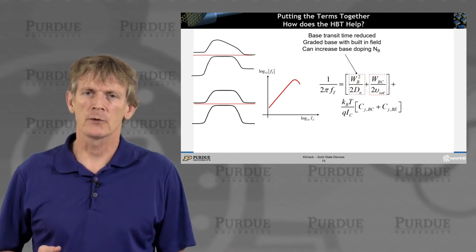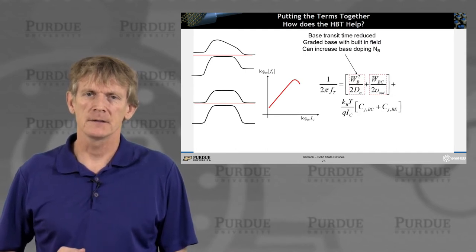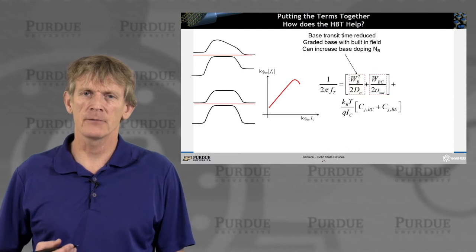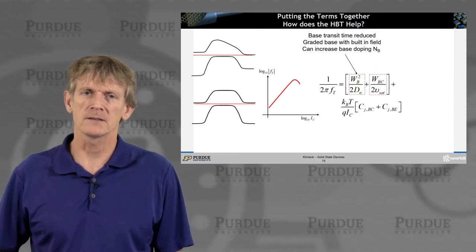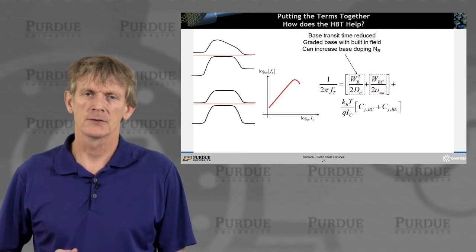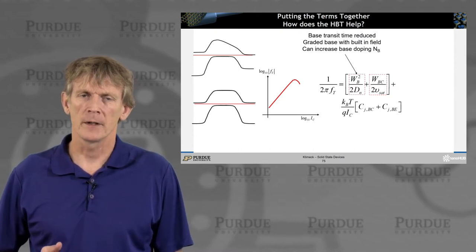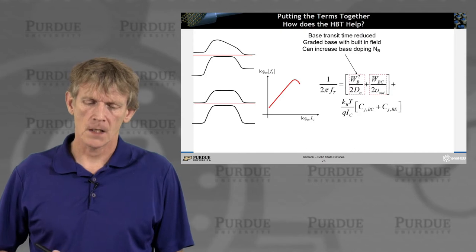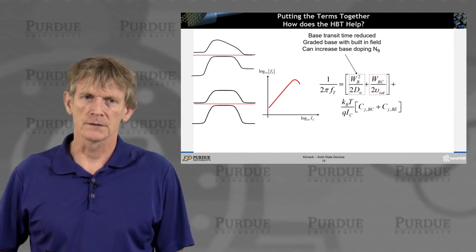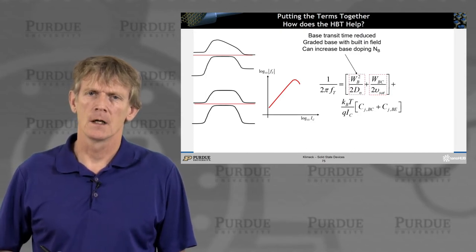And that allows us to increase the base doping. Before, we wouldn't want to increase the base doping, but now we can. And if we do that, we make the device have less modulation of the base, so it's less bias-dependent on the device performance. There's also punch-through that's being reduced. And the early voltage was getting larger.